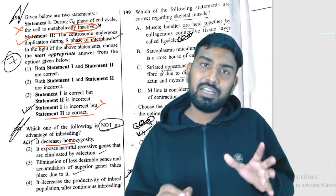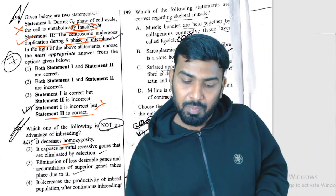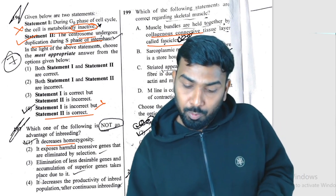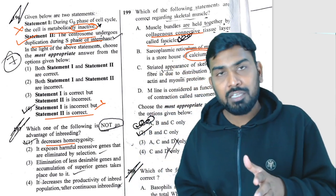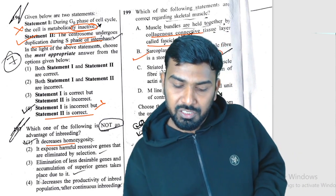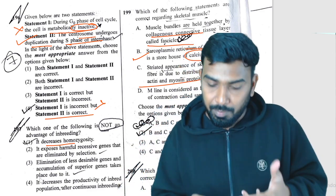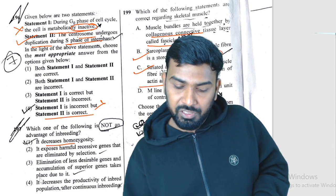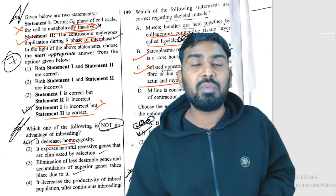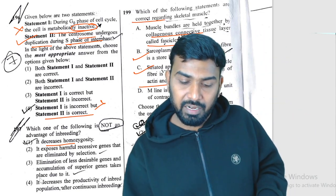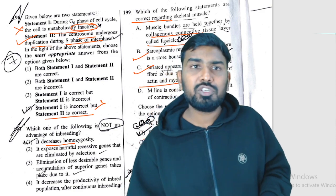Question 199: correct statements regarding skeletal muscle. Muscle bundles are bound by collagenous connective tissue called fascicle — the first option is wrong. Sarcoplasmic reticulum (endoplasmic reticulum equivalent) stores calcium — correct. Striated appearance is due to distribution of actin and myosin (thick and thin filaments) — correct. M-line is the functional unit of contraction — wrong; the sarcomere is the functional unit. So B and C are correct.